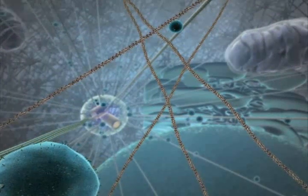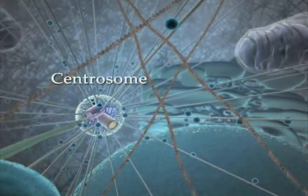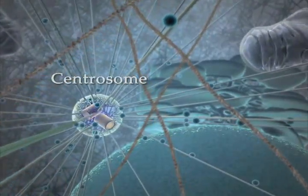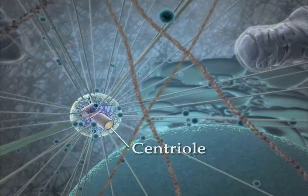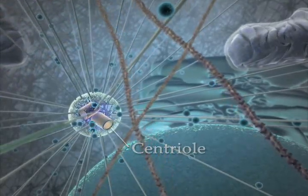All the microtubules originate from the centrosome, a discrete fiber structure containing two orthogonal centrioles and located near the cell nucleus.